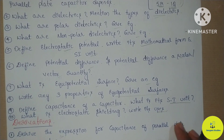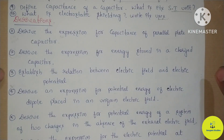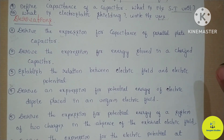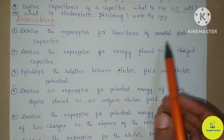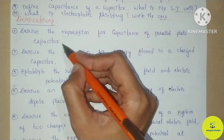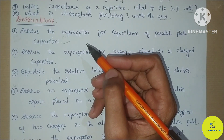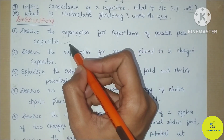So these two and three mark questions you know. For five-mark derivations, there are a total of six derivations, and all six derivations are very important. The first derivation: derive the expression for capacitance of a parallel plate capacitor — this is very important because this year's model question paper has this as a five-mark derivation.